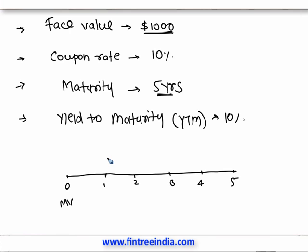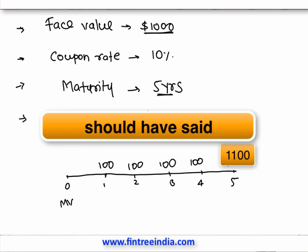By the end of year 1, you receive your first coupon — your first interest payment. That is calculated as face value times coupon rate: 1000 × 10% = 100. So you receive 100 each year for 5 years — that's 5 coupon payments of 100. At the end of year 5, you also receive the face value back. So the face value has two usages: one, coupon is calculated as a percentage of face value; and two, at maturity, face value is returned to the investor. The five cash flows are 100, 100, 100, 100, and 1100.